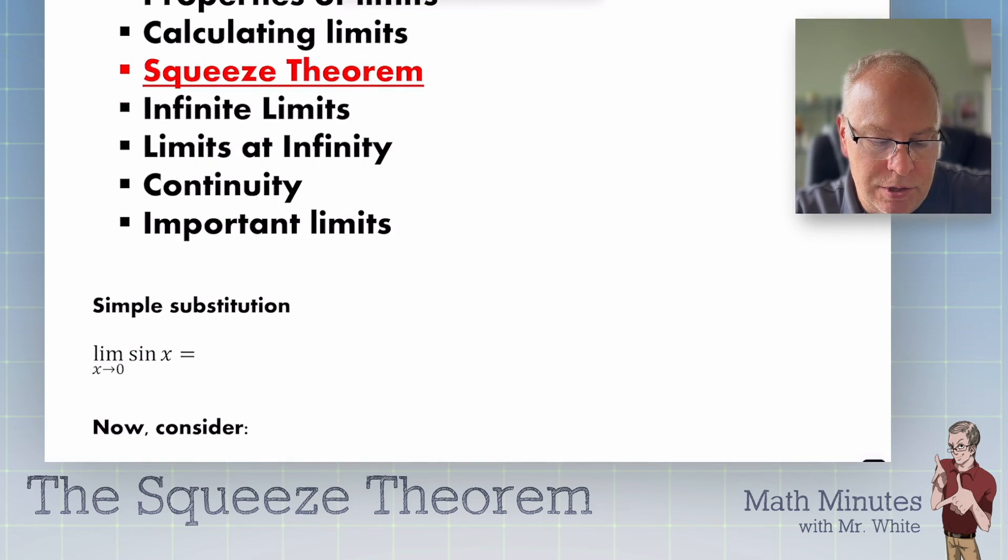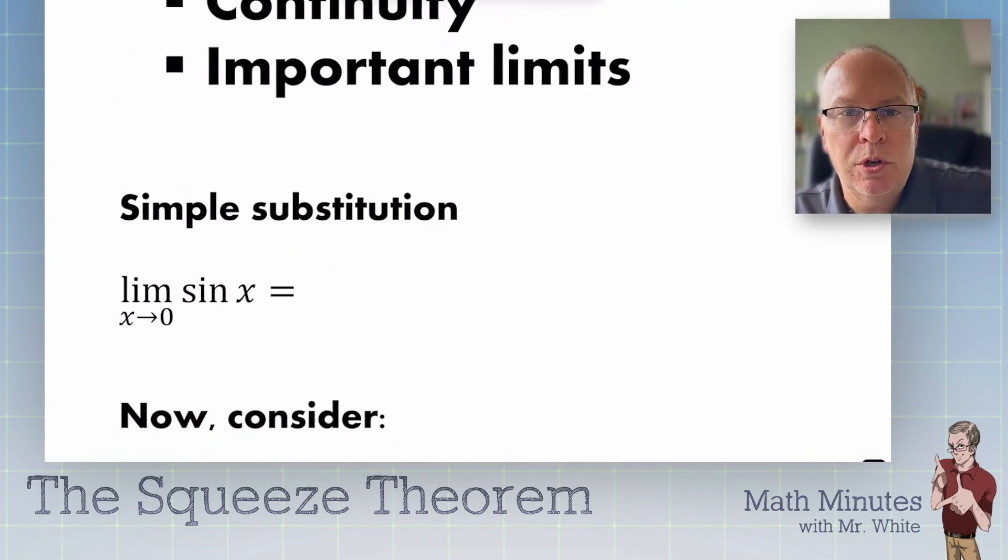Let's first talk about simple substitution. Of course when you can plug a number in, you just do it. So in this case the sine of 0 is just 0. So the limit as x approaches 0 would be 0. Now that's pretty easy.